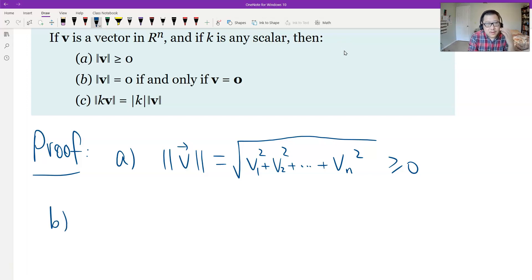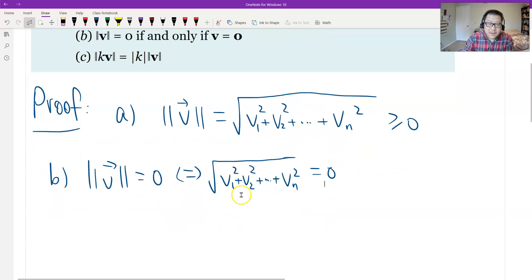The norm or the distance equals zero is equivalent to, by the definition, V1 squared plus V2 squared plus Vn squared equals zero. This square root equals zero only when something under the square root is zero. So therefore, each of them should be zero.